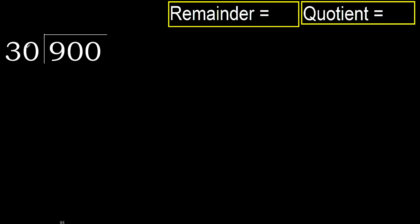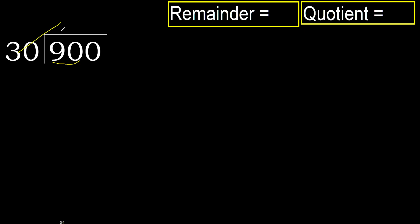900 divided by 30. 9 is less, therefore next. 90 is not less, therefore with 90: 30 multiplied by which number is nearest to 90 but not greater? 30 multiplied by 4 is 120, which is greater.